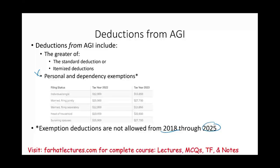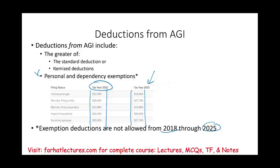For the standard deduction, every year is different. For tax year 2022, these are the amounts. For tax year 2023, these are the amounts — those are tentative, but usually they don't change because the IRS already published them. And for 2024, every year they increase them, so those will change a little. If you're looking at this recording in 2024, 2025, or 2026, the numbers will change, but the concept is the same.